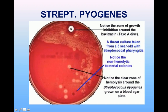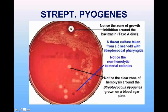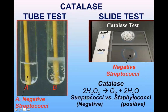A throat culture from a five-year-old with suspected streptococcal pharyngitis shows hemolytic colonies of streptococci alongside non-hemolytic colonies — the normal throat flora such as diphtheroids or Staph epidermidis. If streptococcal pharyngitis is suspected, a bacitracin disc can be placed on Day 1. A zone of inhibition around the disc on Day 2 indicates bacitracin sensitivity, confirming Streptococcus pyogenes.